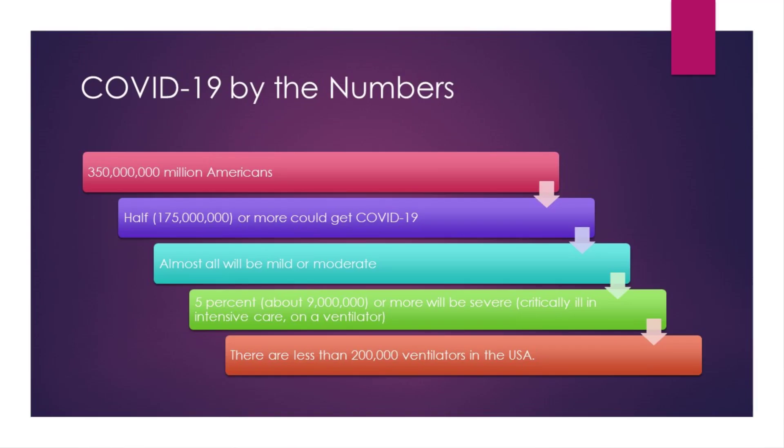What does this look like in terms of actual numbers? Well, there are about 350 million Americans, and at least 50 percent of people may get coronavirus COVID-19. That's about 175 million people. Now remember, almost all, 95 percent of people, will have mild or moderate symptoms that they can take care of at home, but 5 percent, or roughly 9 million people, will be so sick they need to be in the hospital, possibly in the intensive care unit, on a ventilator. And we have less than 200,000 ventilators in the United States.